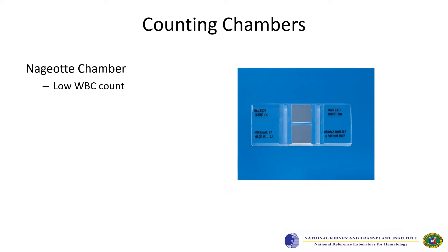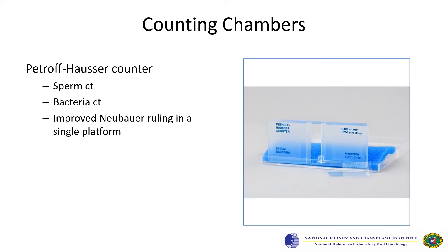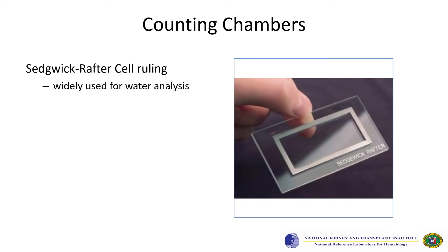There is also a counting chamber used to assess low WBC count. Another is used to quantify nanoplankton, and one counting chamber is used for sperm count and bacterial count — it is a single platform with an improved Neubauer ruling. Another is used for water analysis.